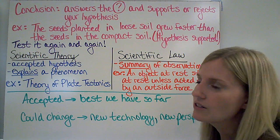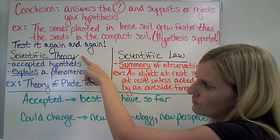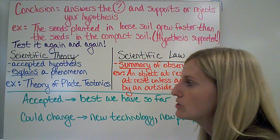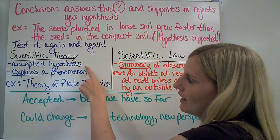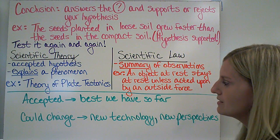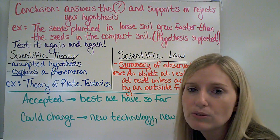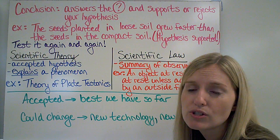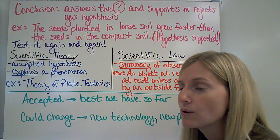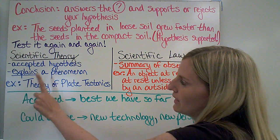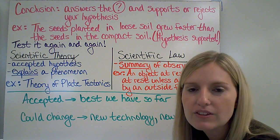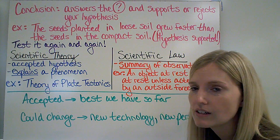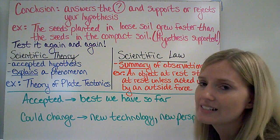When scientists do that repeated testing, they can end up making what we call scientific theories. This is not the kind of theory we talk about in everyday language. A scientific theory is an accepted hypothesis — it has been accepted by the scientific community, meaning there have been lots of experiments to show that it is correct. It explains a phenomenon. My example is the theory of plate tectonics, which explains why we have mountains, earthquakes, and volcanoes, etc.